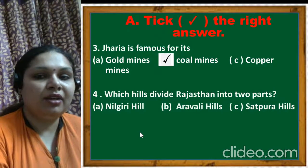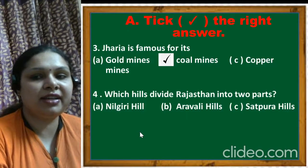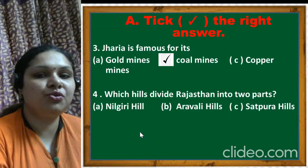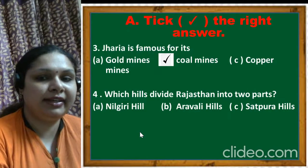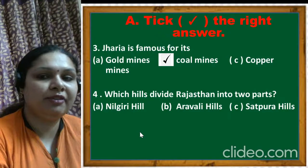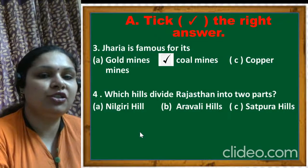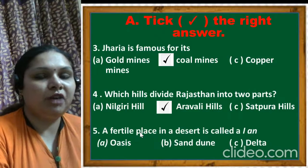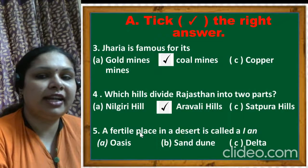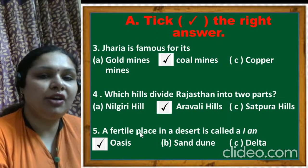Which hills divide Rajasthan into two parts - Nilgiri hills, Aravali hills, or Satpura hills? The correct answer is Aravali hills. A fertile place in a desert is called - an oasis, sand dune, or delta? It is called an oasis.